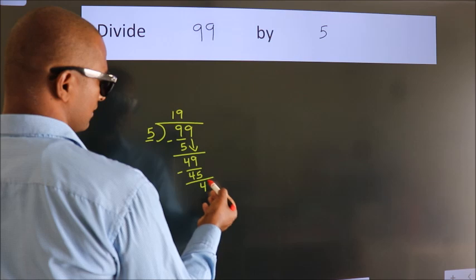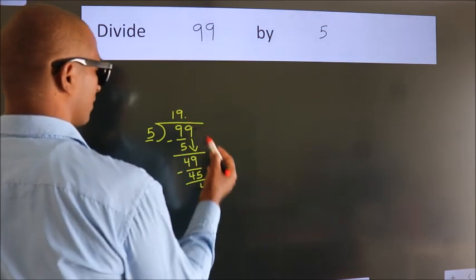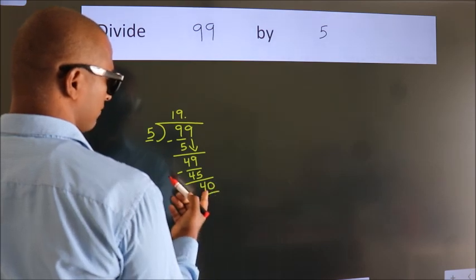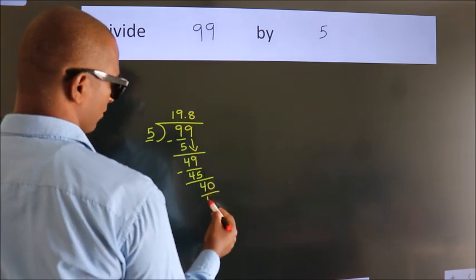After this, no more numbers to bring down. So what we do is put a dot and take 0. So 40. When do we get 40 in the 5 times table?